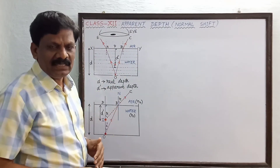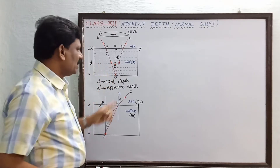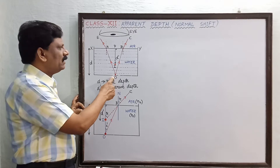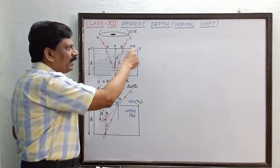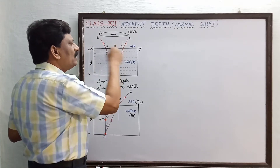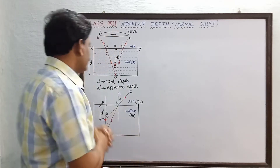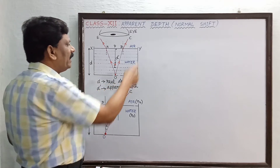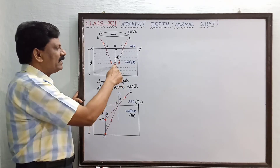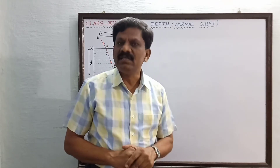For the person observing from the top of the water tank, the image of object O appears at point I, which is closer to the eye. The distance from object O to the water level XY is the real depth, denoted as d. The distance from the image I to the top surface of the water is called the apparent depth, denoted as d'. We need an expression for d' in terms of d.